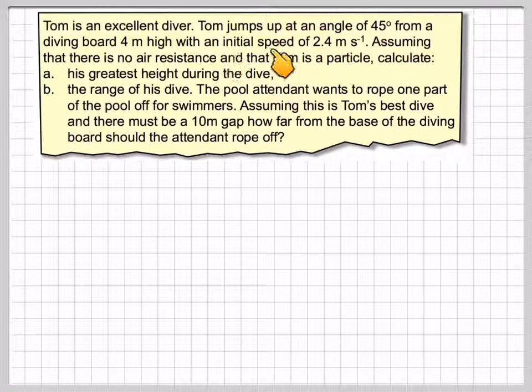Tom is an excellent diver. Tom jumps up at an angle of 45 degrees from a diving board 4 metres high with an initial speed of 2.4 metres per second. Assuming that there is no air resistance and that Tom is a particle, calculate: a) his greatest height during the dive, b) the range of his dive. The pool attendant wants to rope one part of the pool off for swimmers. Assuming that this is Tom's best dive and there must be a 10 metre gap, how far from the base of the diving board should the attendant rope off?